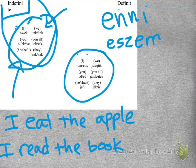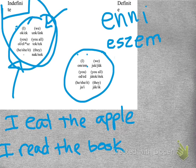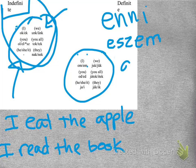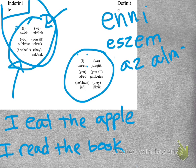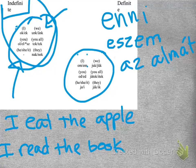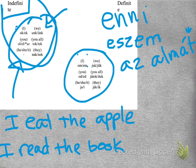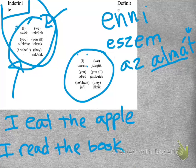So eszem, so eszem, eszem az almát, like that. So, once again, this -t is a weird ending, the word for apple is alma, I'll explain that ending a little bit later. So, eszem az almát, so there's the The.